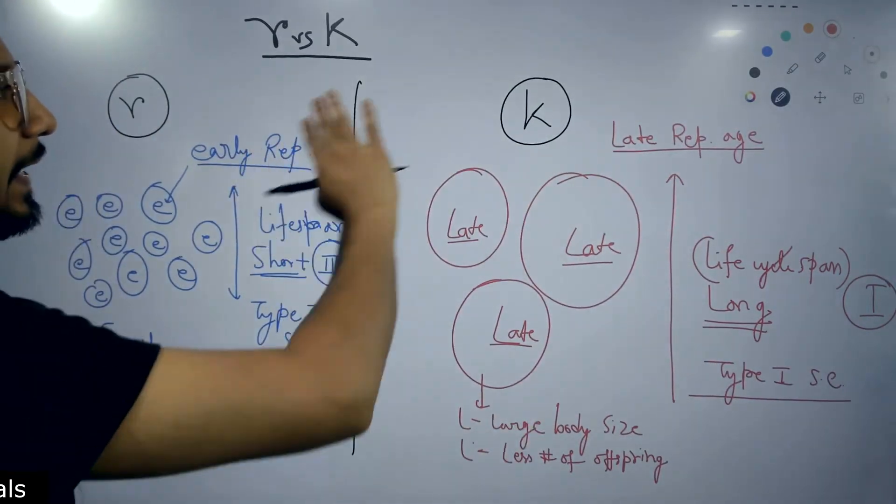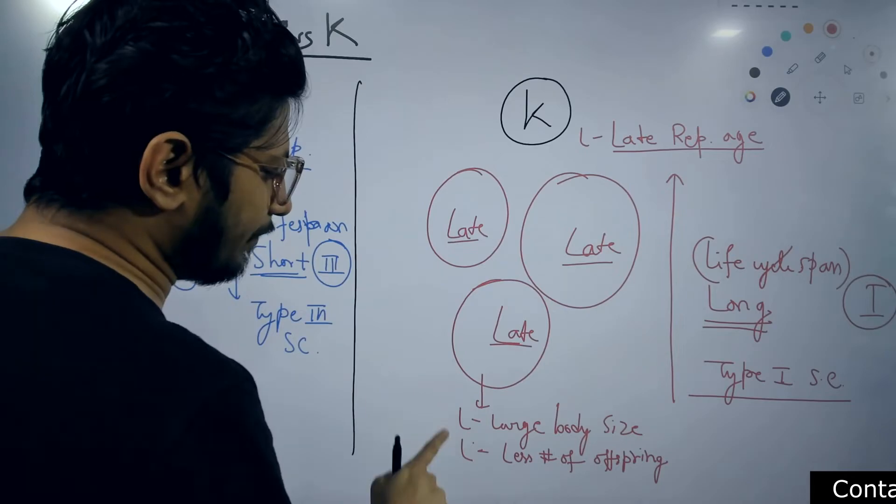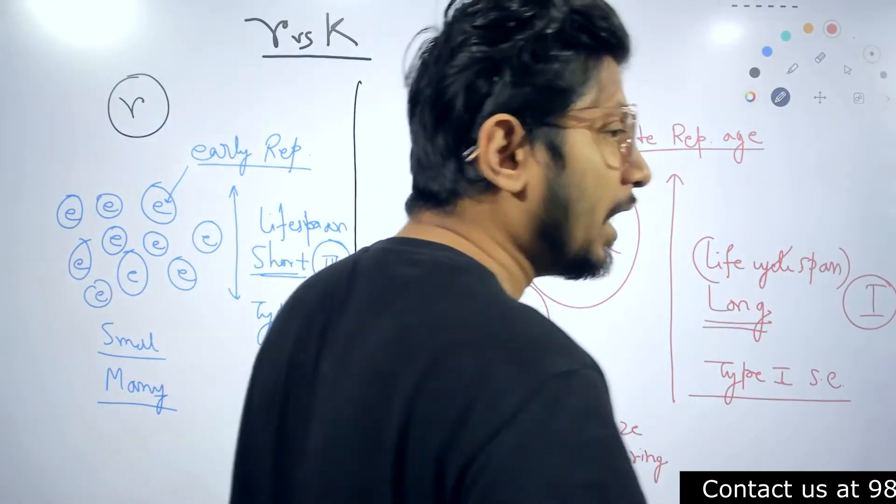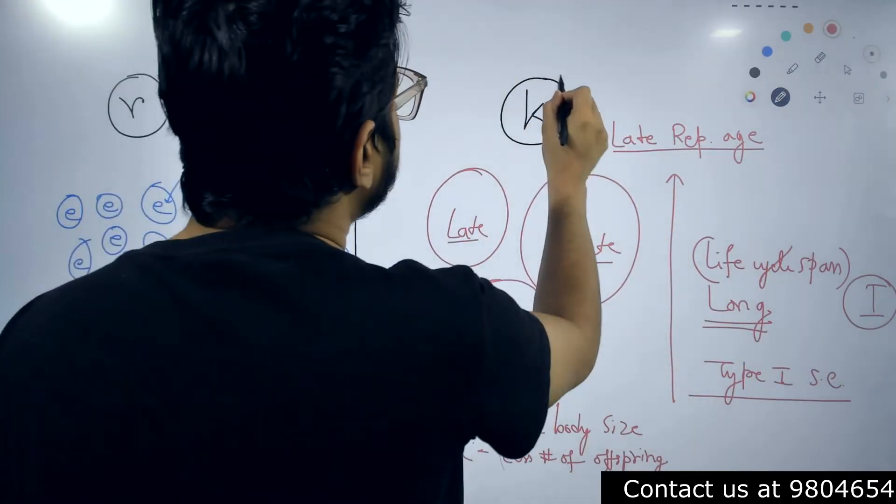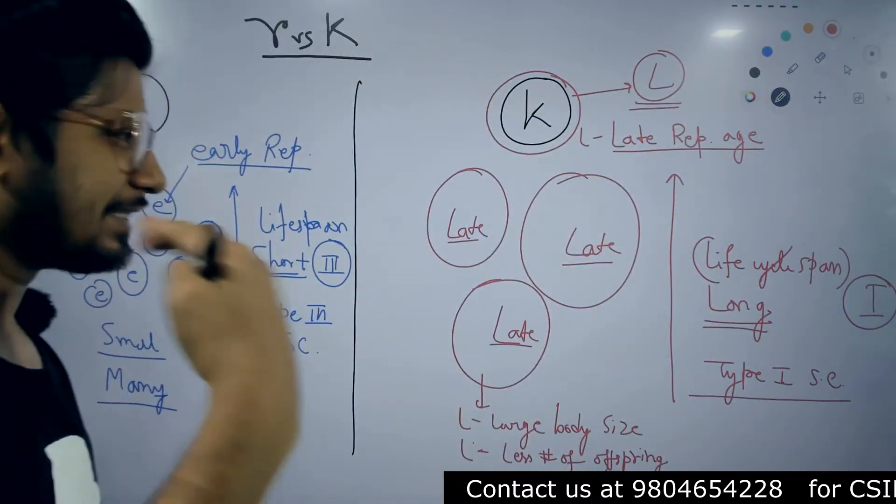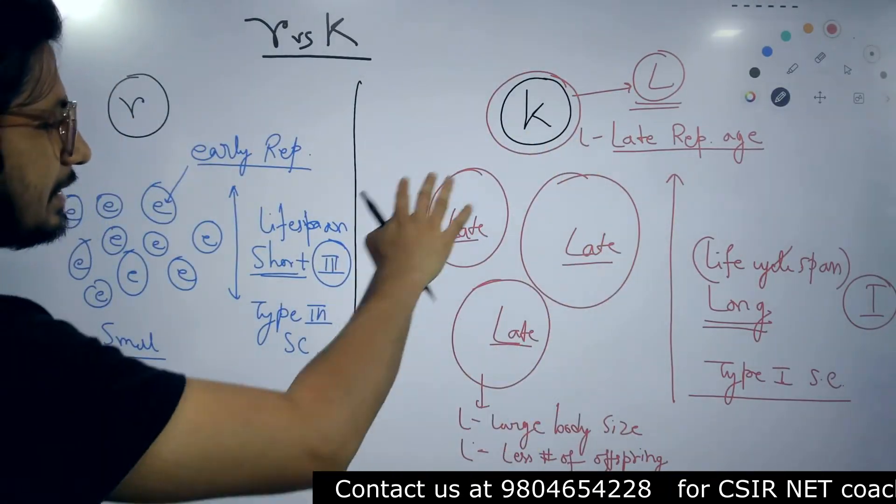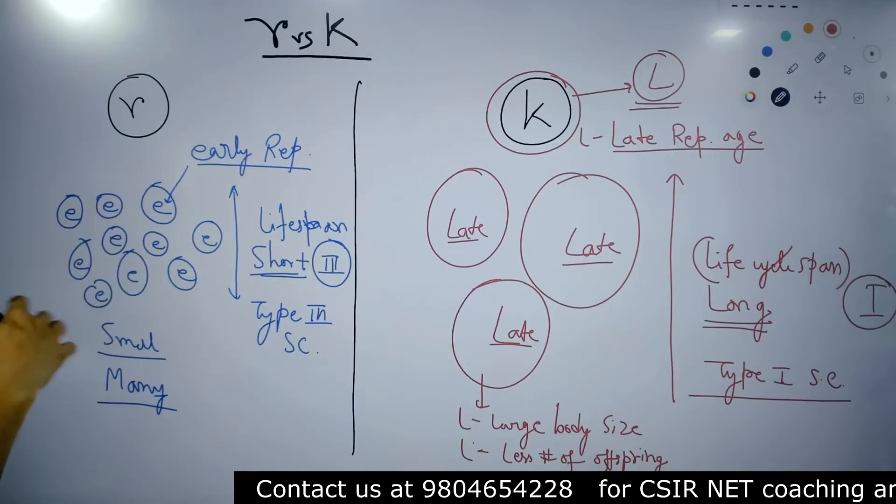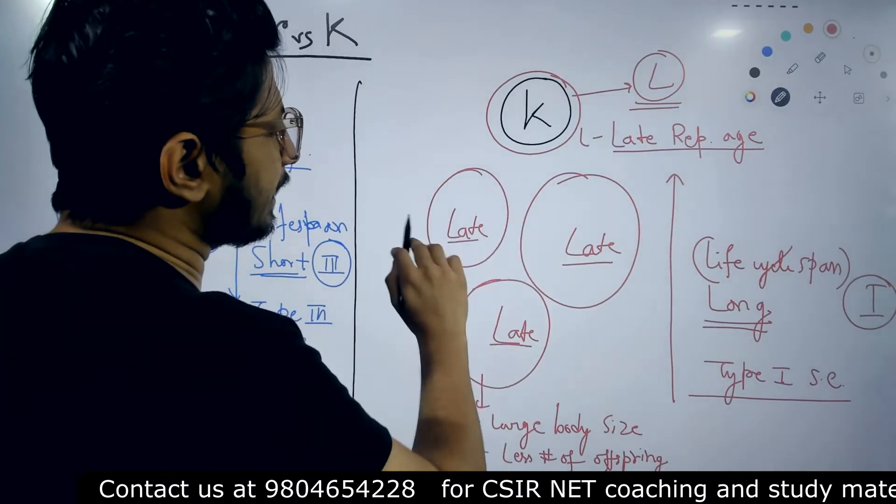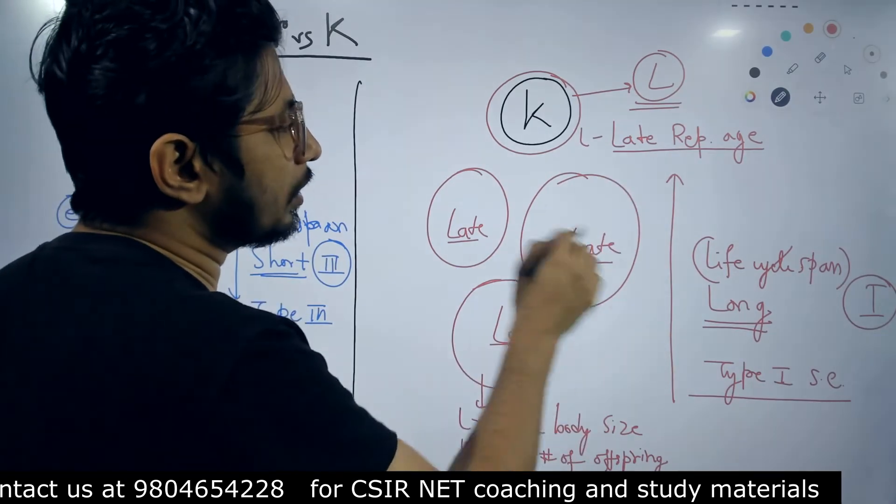In case of K selected species, it is all L. Large body size, L for less number of offspring, L for late reproductive age, and L for long lifespan. All are with L. Actually it is K selected species but it is determined by the alphabet L. This is what you can remember. Watch this image, the difference between this image. Small dots, many, E written on them, and they have a short span. While in case of K selected species, large circles with late or L all over it, long lifespan.